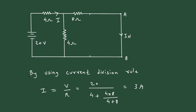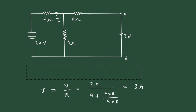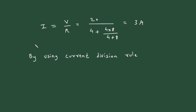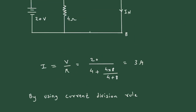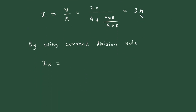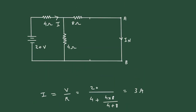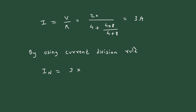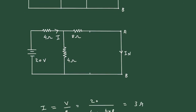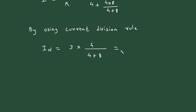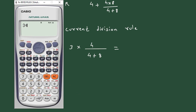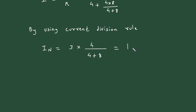Now we can use the current division rule. IN is equal to current I, which is 3 ampere, multiplied by the opposite branch resistance of 4 ohm, divided by 4 plus 8. This gives 3 into 4 divided by 4 plus 8, which is 1 ampere. The value of Norton current IN is equal to 1 ampere.